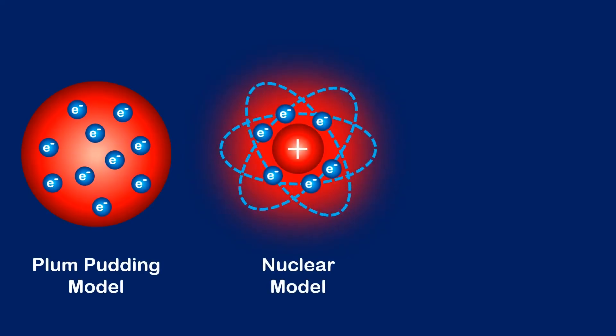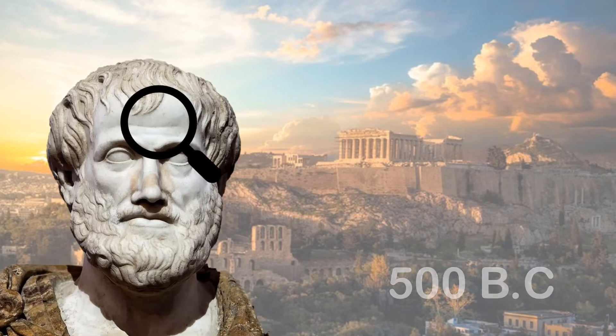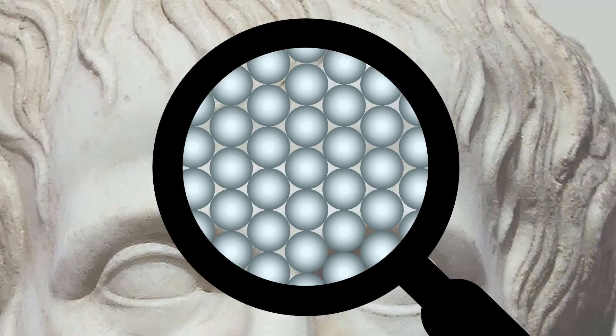So how did we come up with our current model of the atom? In 500 BC, a clever Greek man named Democritus thought that stuff might be made of tiny solid balls called atoms.